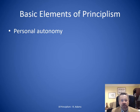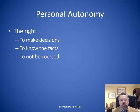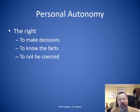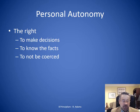Let's look at the basic elements of principalism. First is personal autonomy — we've talked about this under deontology. This is the right of every patient to make decisions for themselves, to know the facts, and to not be coerced into making that decision. It is very popular and very much a strong driver in health care as we know it today in the United States.